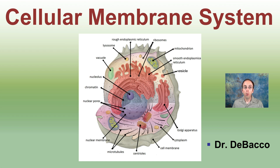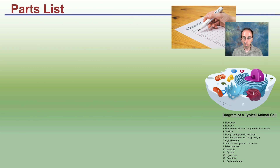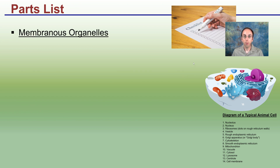Here I'm going to be going over some of the cellular membranes located within a cell, and a lot of these will apply to both plants and animal cells. Starting off with just a general parts list, you can see located just below me a typical animal cell as an example. These are membrane organelles — organelles that have membranes.